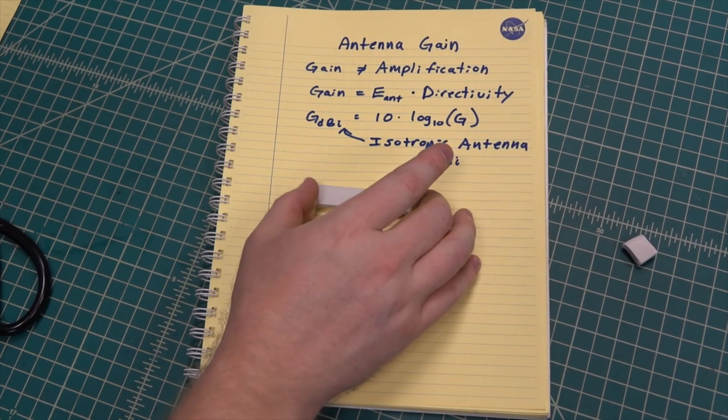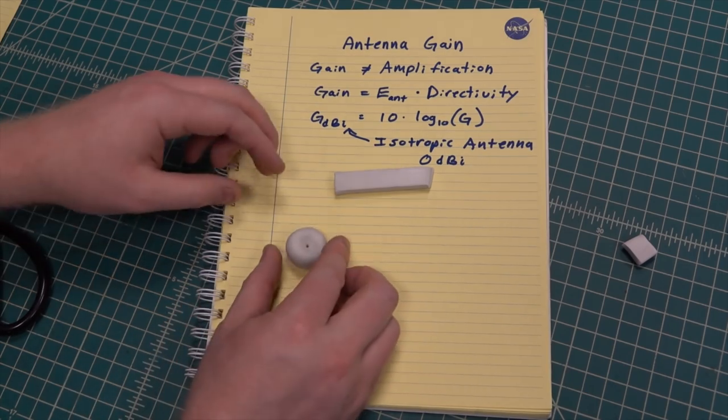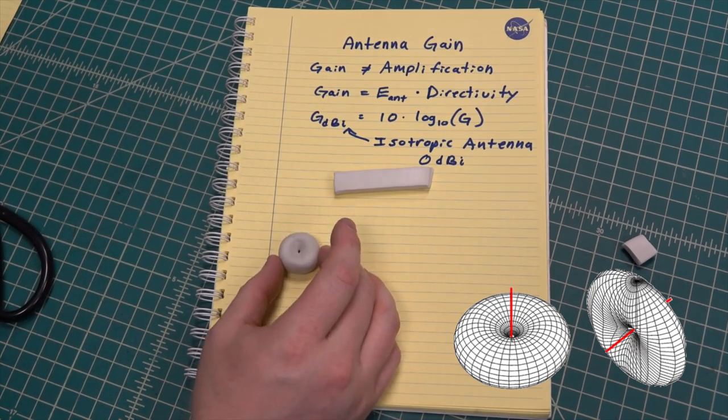Now let's say we have three antennas with the same efficiency connected to the same 100 watt transmitter but each have different radiation patterns. The volume of putty for each antenna is the same. The first pattern represents a half wavelength dipole and is pretty omnidirectional.